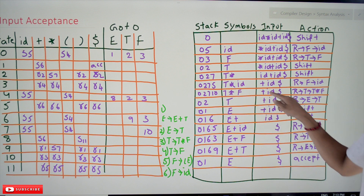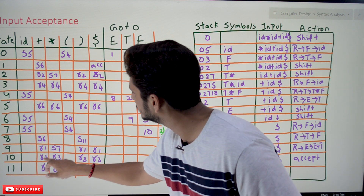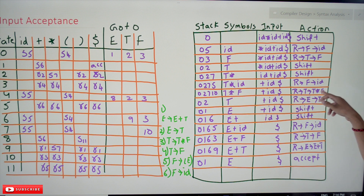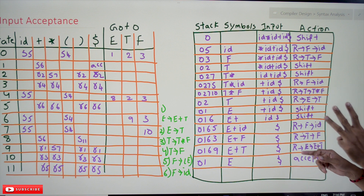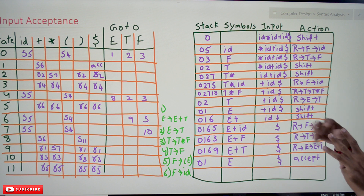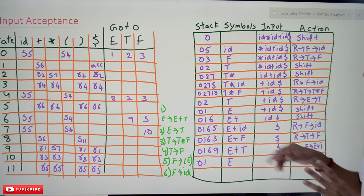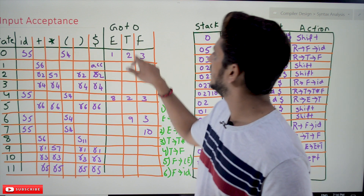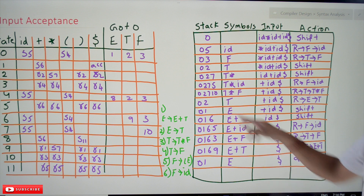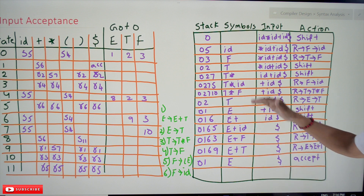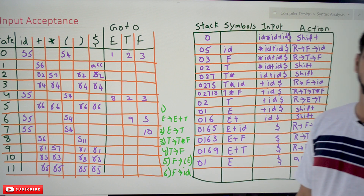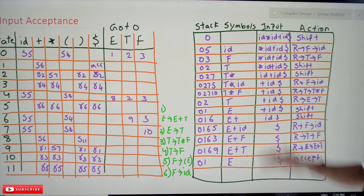State 10 on + says reduce by production 3: T → T ★ F. The right-hand side has three symbols, so pop three elements — 10, 7, and 2 are popped off. Remaining on stack is 0. State 0 on T says push 2. Stack is now [0, 2]. T ★ F is reduced to T. Continuing in this manner, eventually state 1 on $ says accepted — this is how the given input string is accepted.